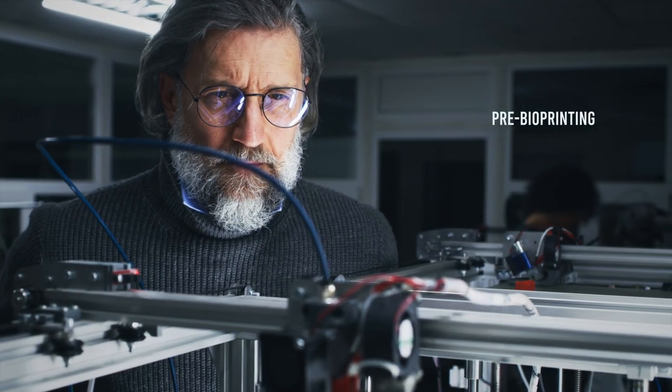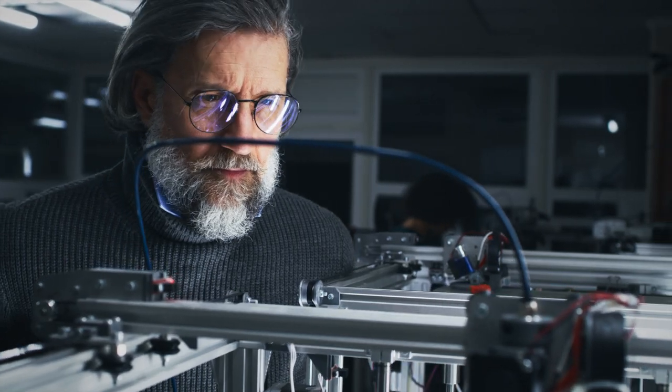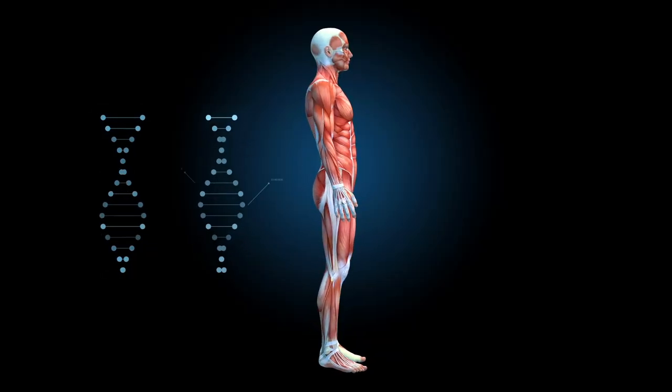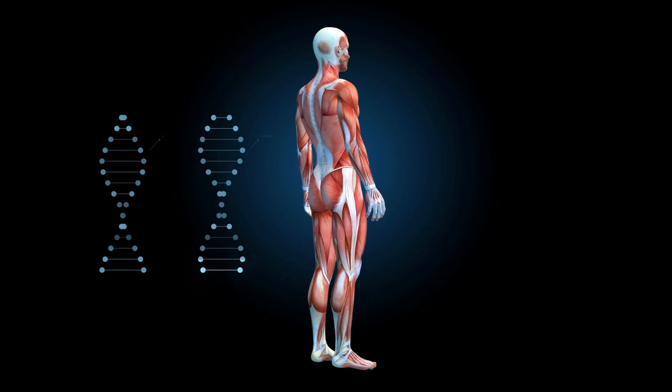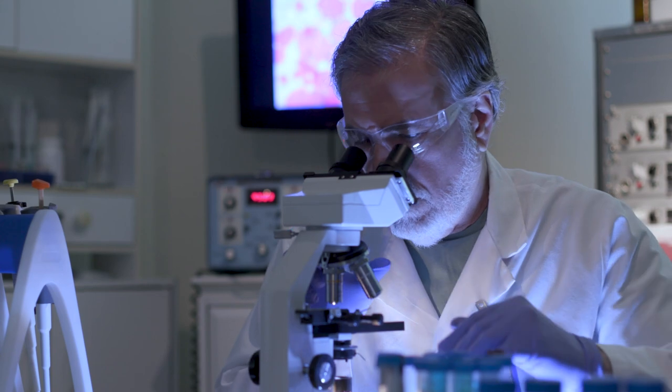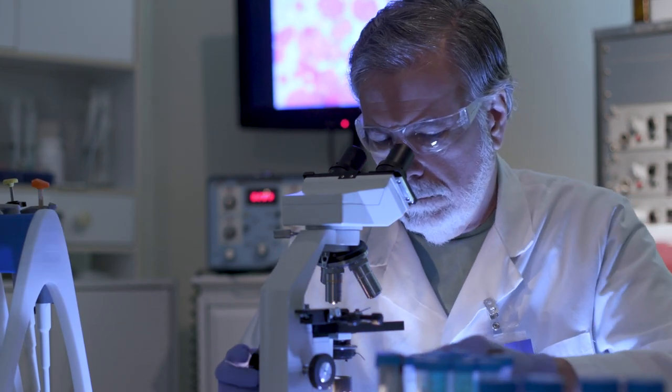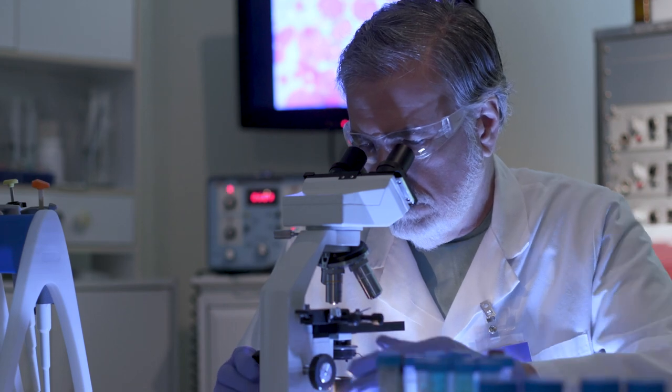First, we have pre-bioprinting. Think of it like preparing a recipe for the printer to follow. Scientists use complex scans like CT and MRI to make sure they have all the right ingredients. They mix cells with a special ink and use a special camera system to make sure they have enough cells to successfully print a tissue model.